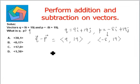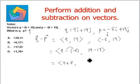This can be written as q minus p is 9 minus negative 8 and 19 minus 19. This equals, negatives times negative is a positive, 9 plus 8 comma 19 minus 19 is 0. So, this equals 17 comma 0. This is the final answer, which can be seen in option c.